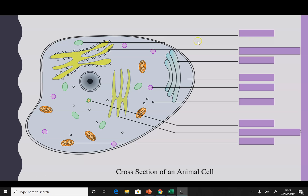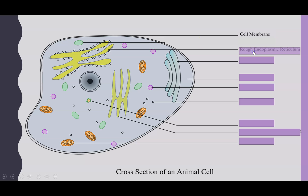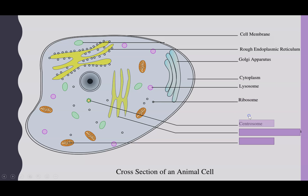The next layer is pointing to the rough endoplasmic reticulum. On the outside, all of those circles are representing the ribosomes. Then we have the Golgi apparatus, which is slightly curved in shape. Then the cytoplasm, the lysosomes, individual ribosomes, and the centrosome or centrioles — though that's not on our list of structures to know at this stage. Finally, we have the smooth endoplasmic reticulum and the mitochondria.